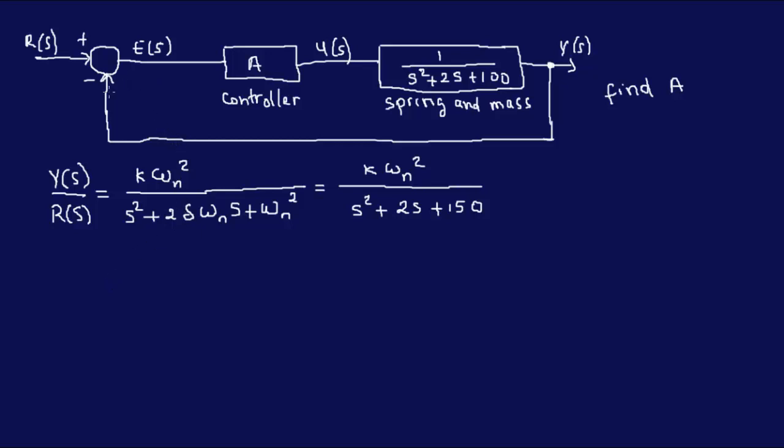So let's get the Y(s) over R(s) from the block diagram. So Y(s) over R(s), remember, is equal to g(s) over 1 plus g(s)h(s). And we have a unity feedback here so there is no h(s).